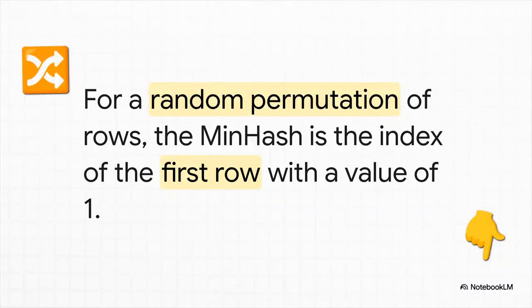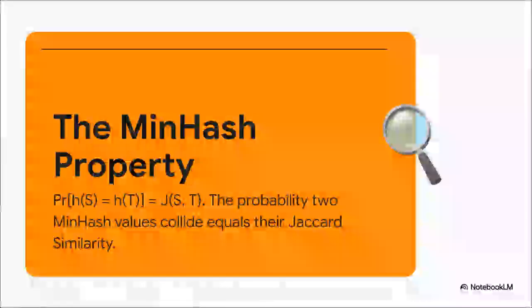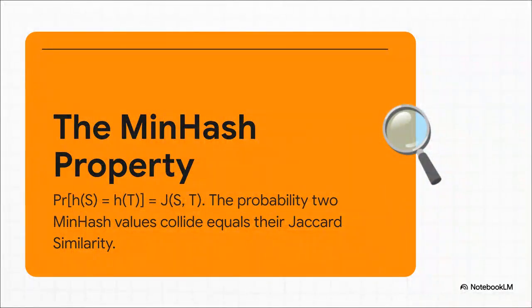Now here comes the incredibly clever trick behind MinHash. Imagine we take all those rows in our giant matrix and just randomly shuffle their order, a complete permutation. Now, for each document, we just scan down its column and stop at the very first row where we see a one. The number of that row becomes the first component of our signature. And then we do it again. We shuffle the rows in a different random order, find the first one, and that's the second part of our signature. We repeat this process hundreds of times to build a complete compact signature for every single document. And here is the absolute magic, the mathematical punchline. It turns out that the probability of any two MinHash signatures having the same value is exactly equal to the Jaccard similarity of their original full sets.